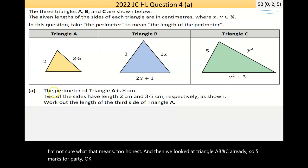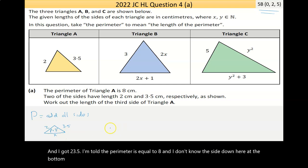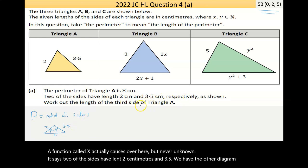So five marks for part A. We see here the perimeter of triangle A is 8 centimeters. Now, without even going any further, at this stage, I just write down the formula. Perimeter is equal to add all sides. We're looking here at triangle A, so maybe I'll redraw it. I go 2, 3.5. I'm told the perimeter is equal to 8. And I don't know the side down here at the bottom. I'm just going to call it X.